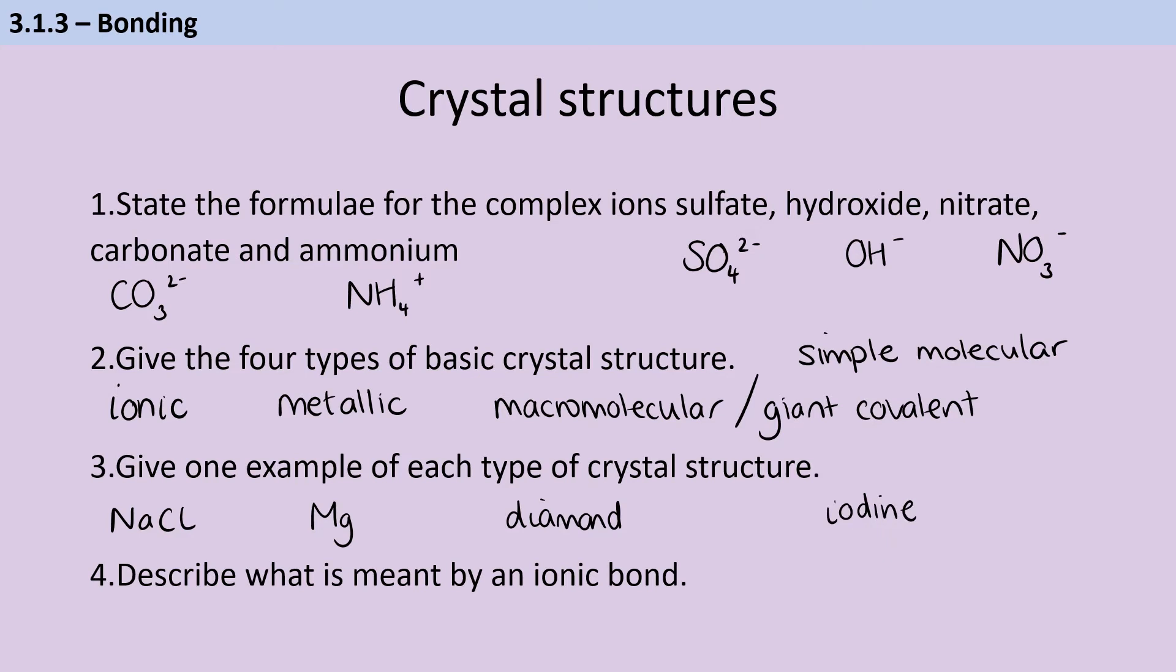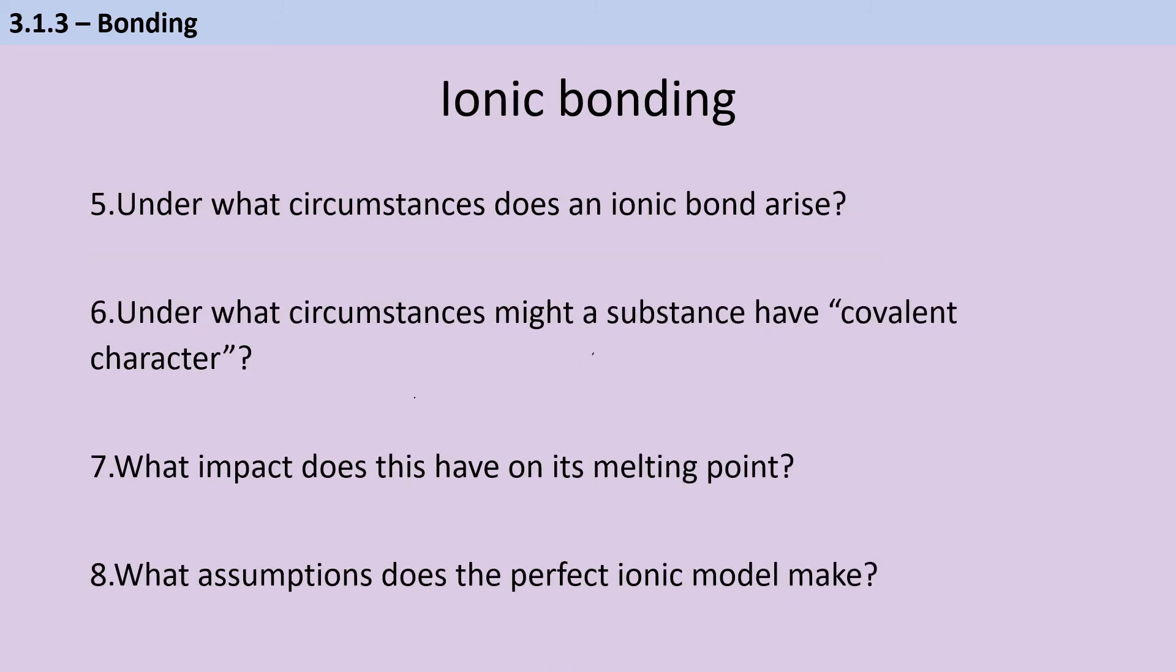An ionic bond is the electrostatic attraction between some oppositely charged ions that are formed together into a lattice. In order to have an ionic bond, we need to have some ions. So the first stage in the process is electron transfer from a metal to a non-metal. This then creates the ions, and then it's the force of electrostatic attraction between those positively and negatively charged ions which leads to the ionic bond.